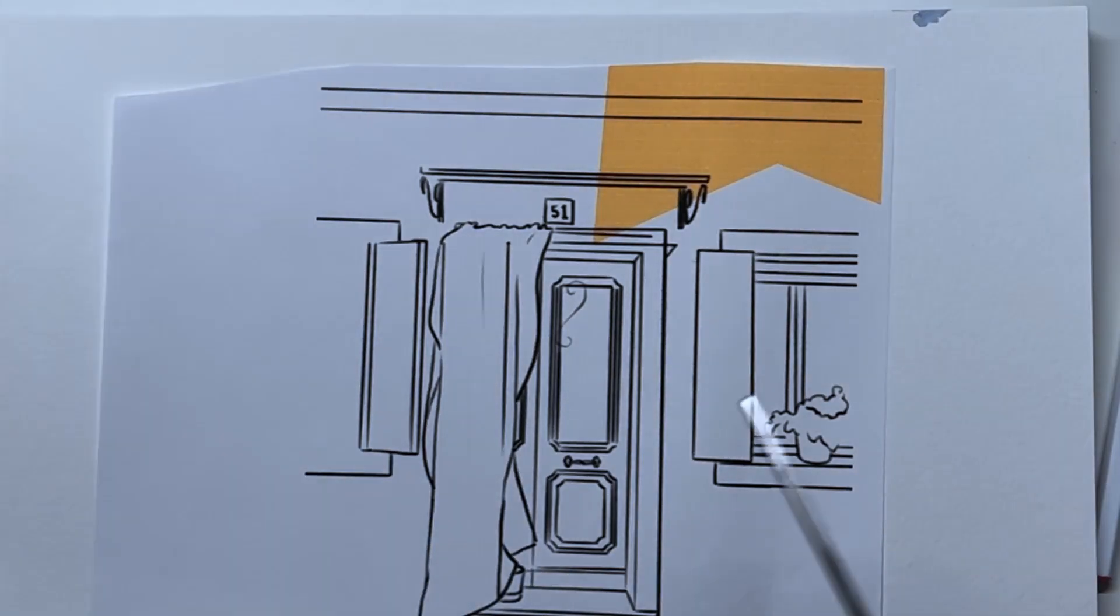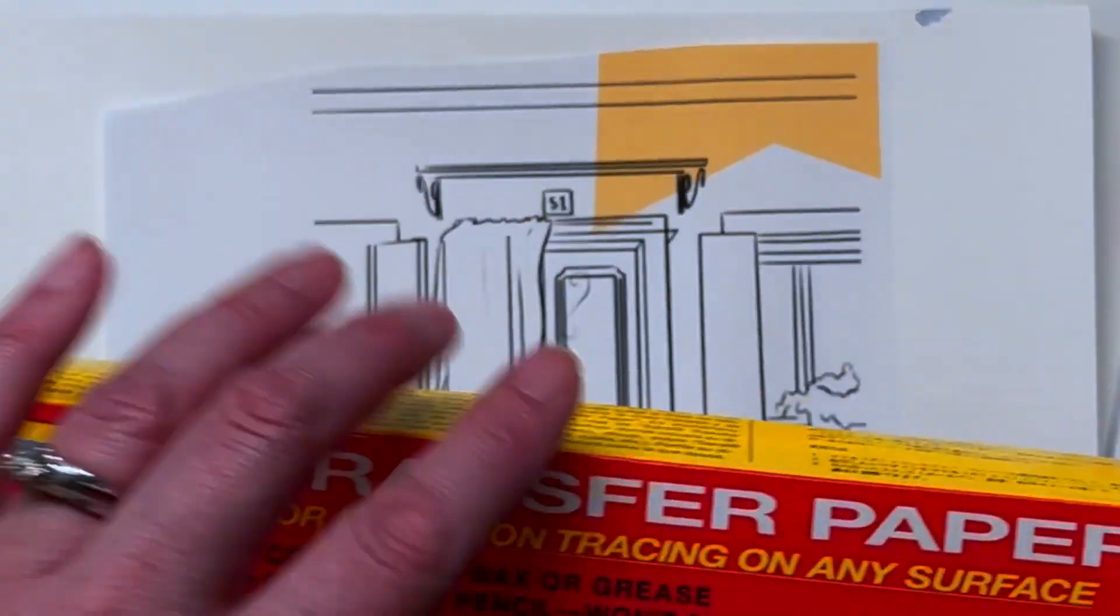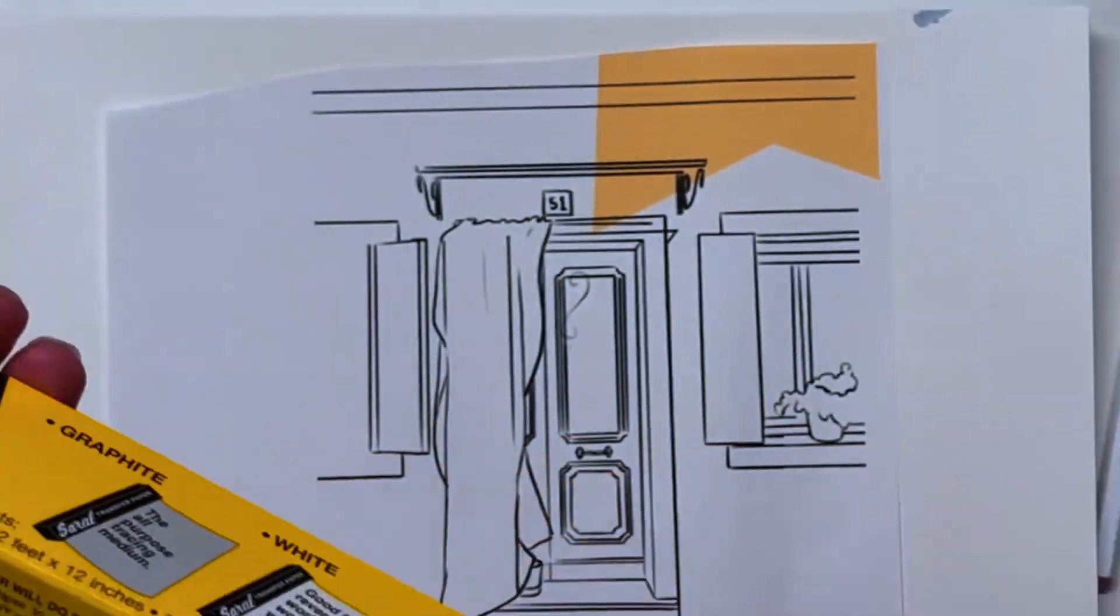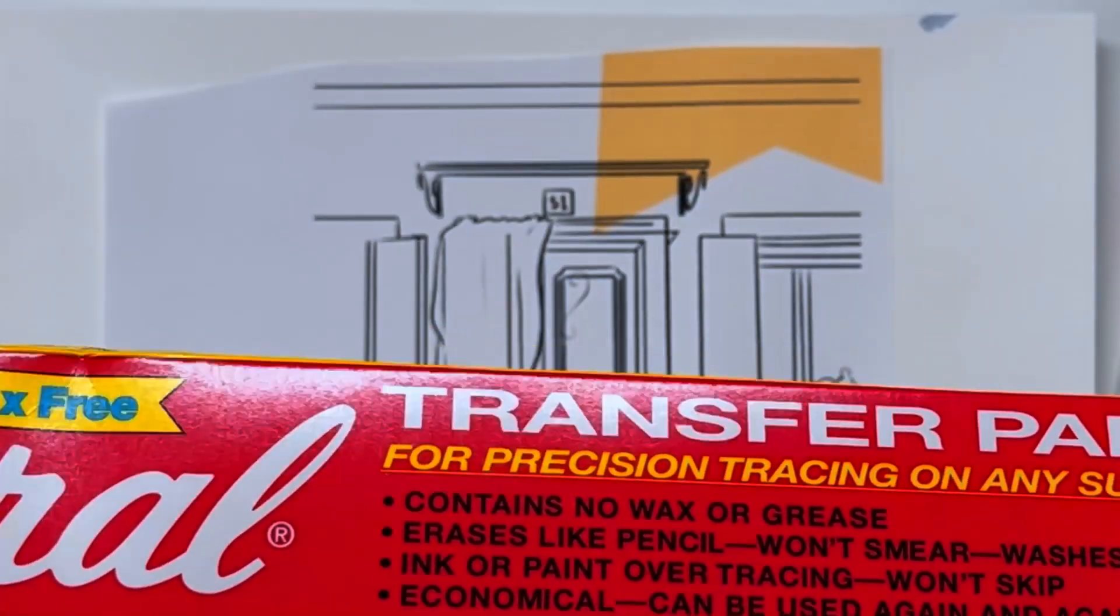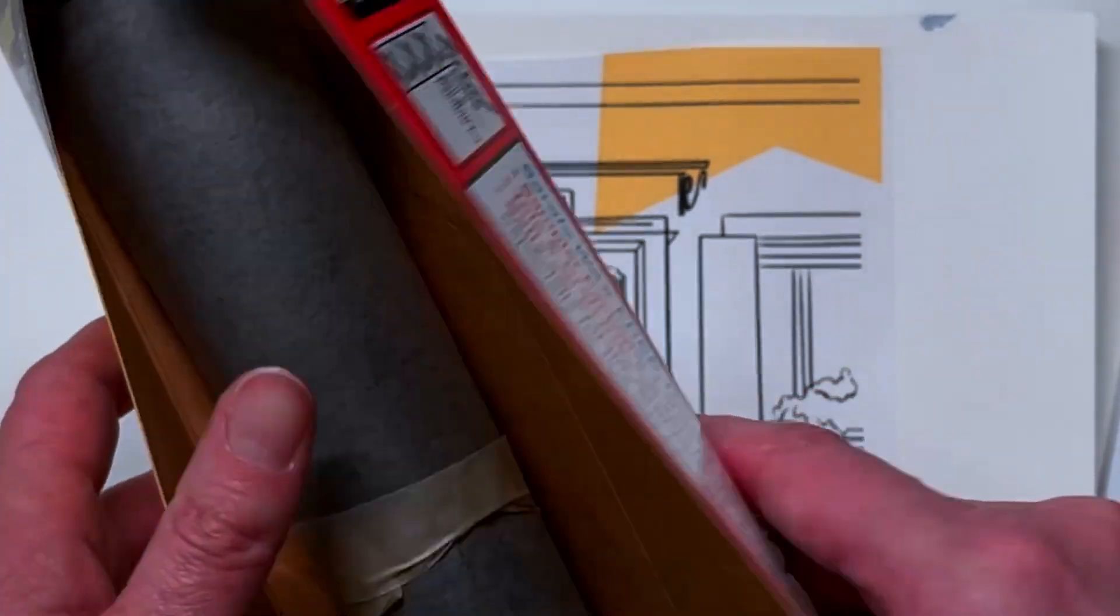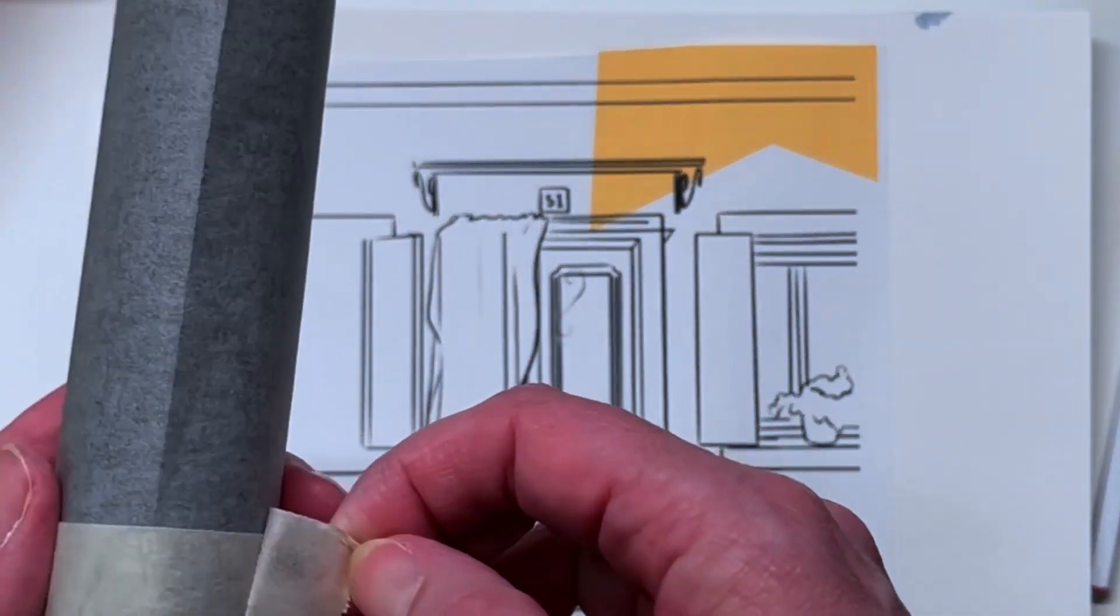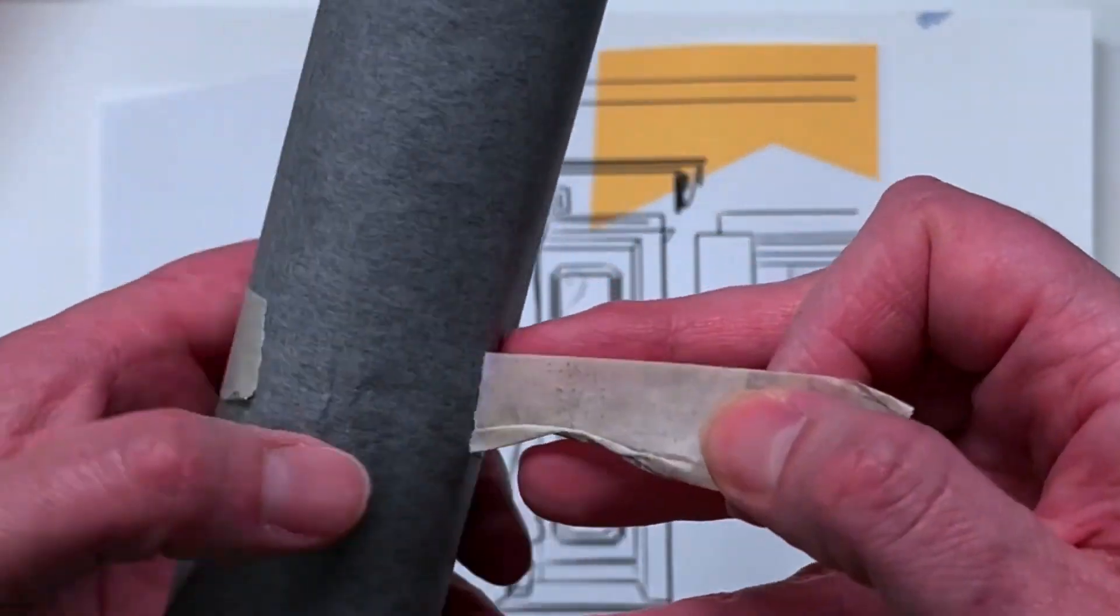So I have the size that I'm going to need to do my transfer and then next I'm going to take my Saral transfer paper. This transfer paper acts a little bit like saran wrap in that it's in a roll. Like this one looks like it could be a brand new roll that I haven't unwrapped before.